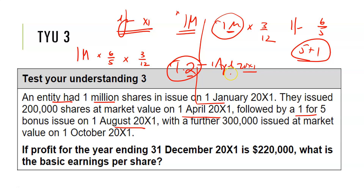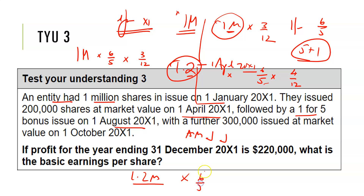These additional shares will also get their bonus issue since the bonus happened in August, after the April market issue. I carry on weighting up to the date of the actual bonus issue — the 1st of August. That's April, May, June, July: four months. At this point, with 1.2 million shares multiplied by 6 over 5, I calculate: 1.2 × 6 ÷ 5 = 1.44 million shares. So by the 1st of August, I have 1.44 million full shares.